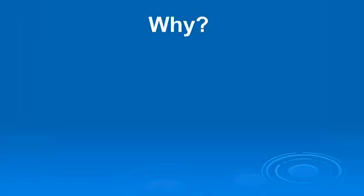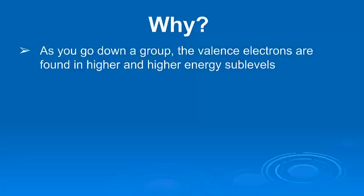Now why? What's causing this? There are a couple things that we have to consider. The first thing is as we go down a group, the valence electrons in those elements are going to be found in higher and higher energy sublevels. So you know that lithium, for example, its valence electron is in 2s. Now right below that, sodium, its valence electron is in 3s.